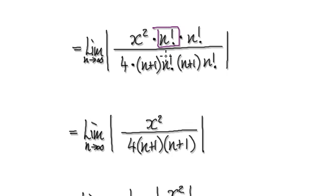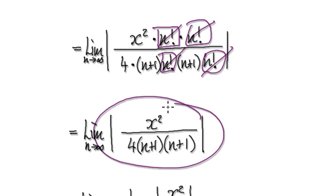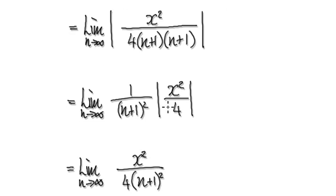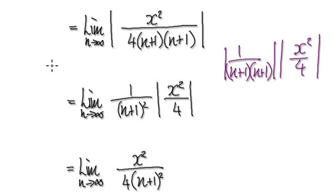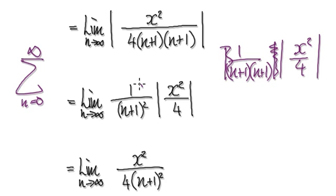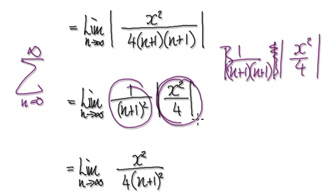This block here will cancel out with this block, and this block will cancel out with this block. So that leaves you with this. Your normal routine when you get here is to group all the n terms together. Grouping them gives you 1 over (n+1), times (n+1), times x squared over 4. Since n is always positive — n runs from 0 to infinity — the absolute sign is redundant and you can remove it.